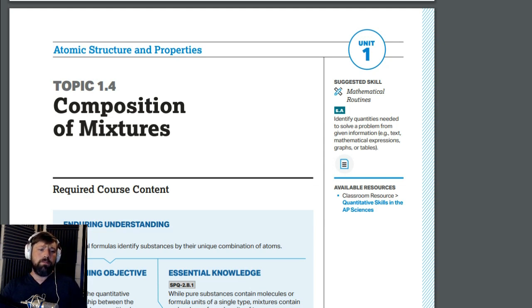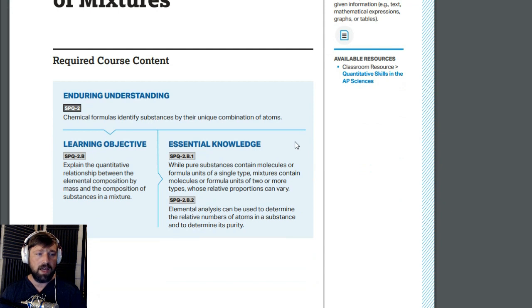For this one, we're going to look at what different types of mixtures are, homogeneous, heterogeneous, and go through a little bit about using some elemental analysis to determine relative numbers of atoms in a substance to determine purity. We're also going to look at a couple of experimental ways that you can separate out mixtures.